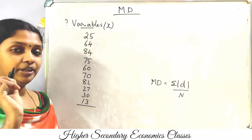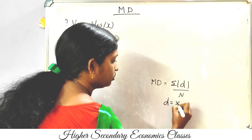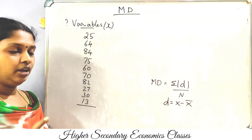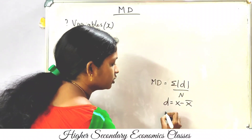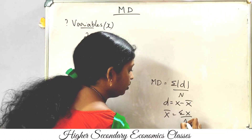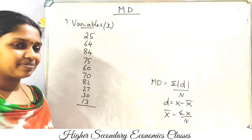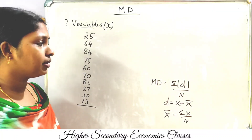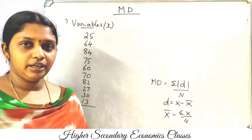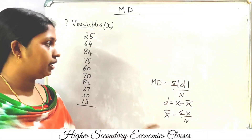Mean deviation is equal to sigma modulus d divided by n. Then d is equal to x minus x-bar. Then x-bar is equal to sigma x by n. Then we will talk about the arithmetic mean: x-bar is equal to sigma x by n.